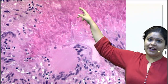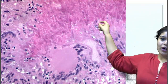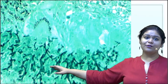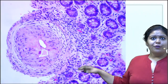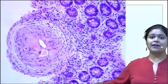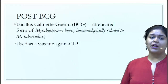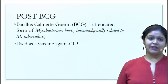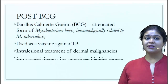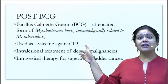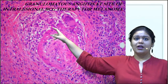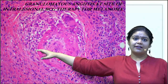In another image, you can identify organisms on top that are long and acutely branching — this is Aspergillus, which becomes more obvious with GMS stain. Another photo shows colon with a granuloma and two ova of Schistosoma — even helminths can cause granulomatous inflammation. Post-BCG treatment — used as a vaccine and also intralesionally for dermal malignancies and intravesically for superficial bladder cancer — can also cause granuloma formation, including a Langhans-type giant cell within a vessel, called granulomatous angiitis.